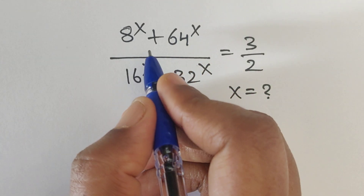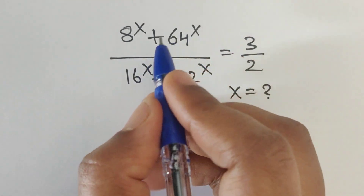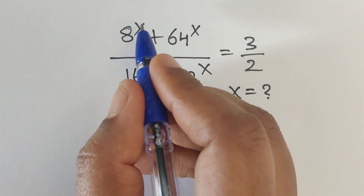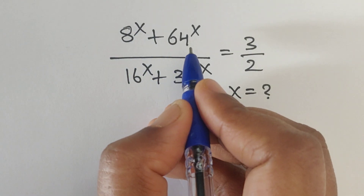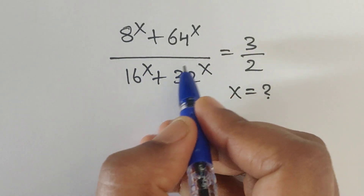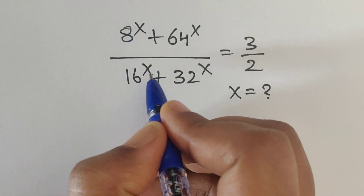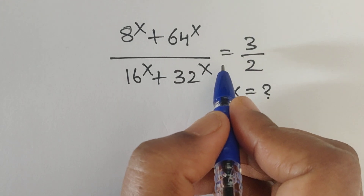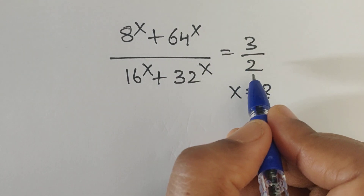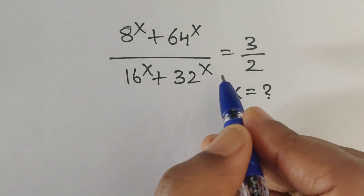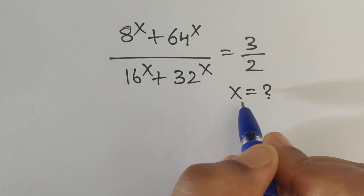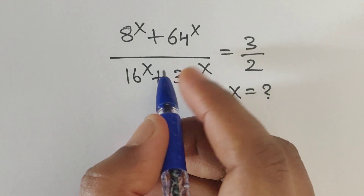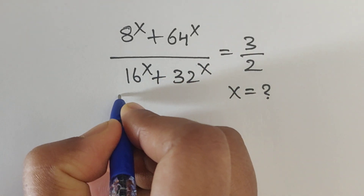Hello everyone, welcome back to our channel. Here we have one question: 8^x plus 64^x divided by 16^x plus 32^x equals 3/2. In this problem we have to find the value of x. Let's see the solution.